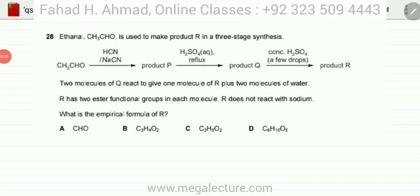The question reads that ethanol is used to make product R in a three-stage synthesis. You have ethanol and you're making product R through a couple of reactions. Two molecules of Q react to give one molecule of R plus two molecules of water.